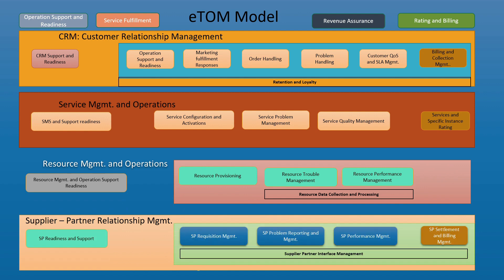Each and every function or application area — CRM itself is an application for onboarding the customer and having the customer information. It comprises of marketing fulfillment, order handling, problem handling, and SLA management. Service Management Operation is followed by activations, problem management, and QoS service quality management. Then there is resource provisioning, resource trouble management, and performance management. Supplier Partner Relationship Management includes performance management, problem reporting, and requisition management.